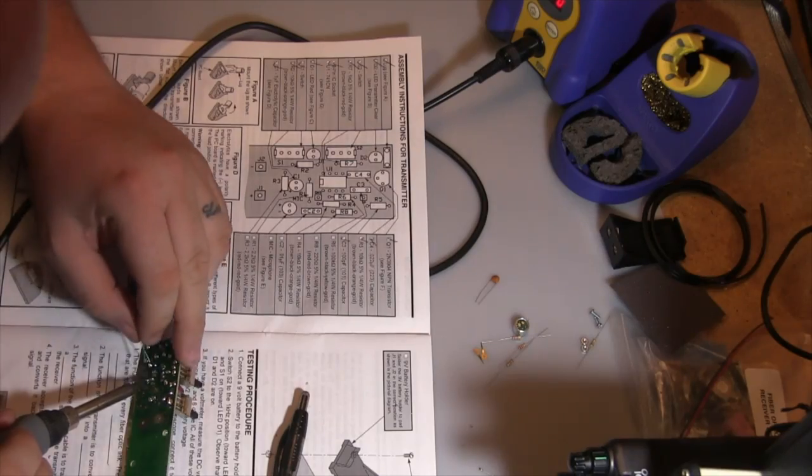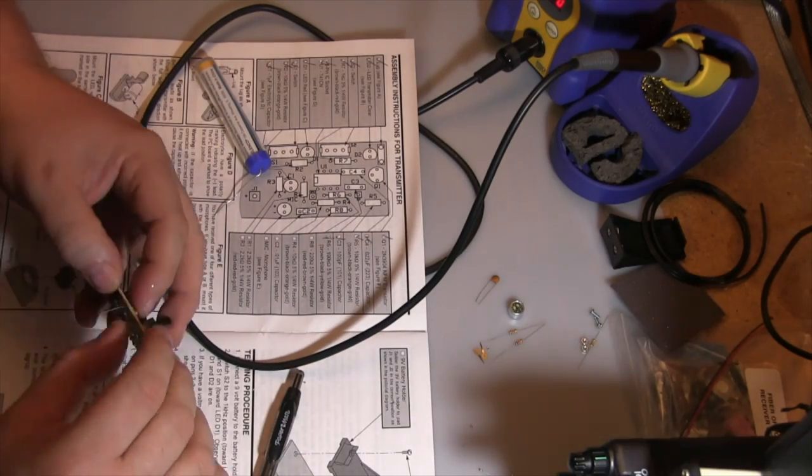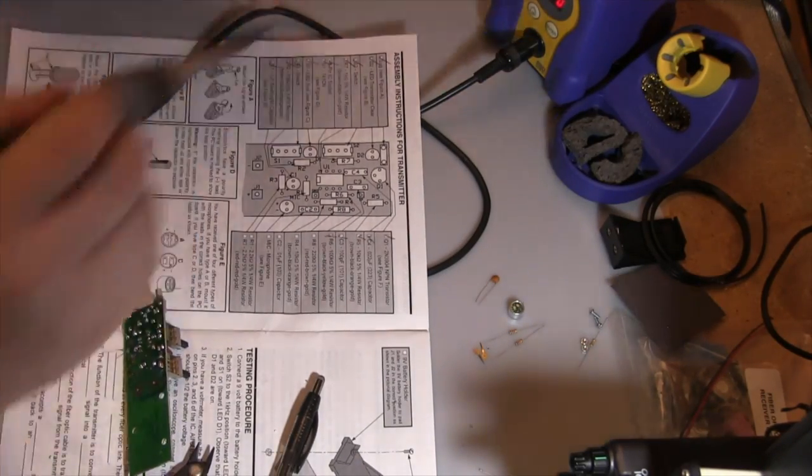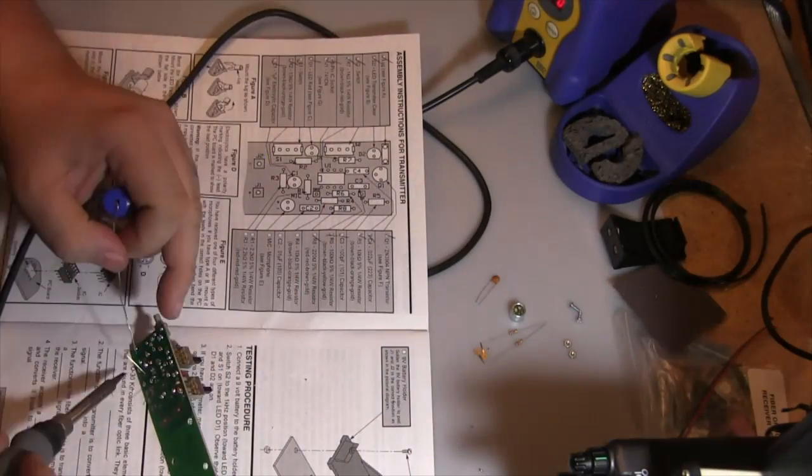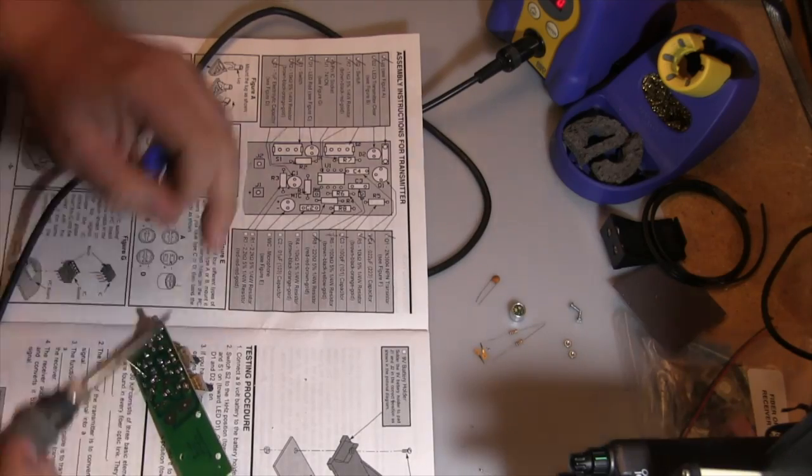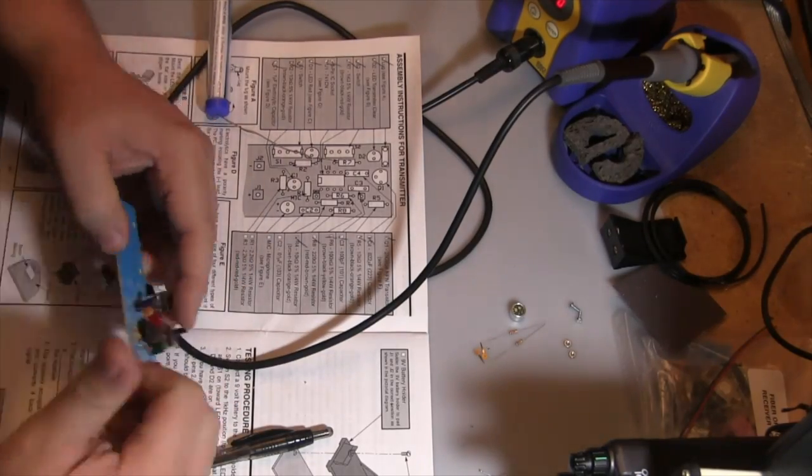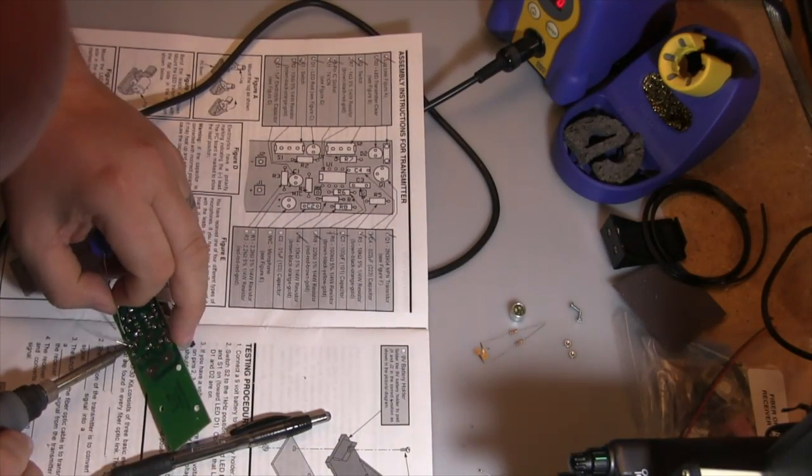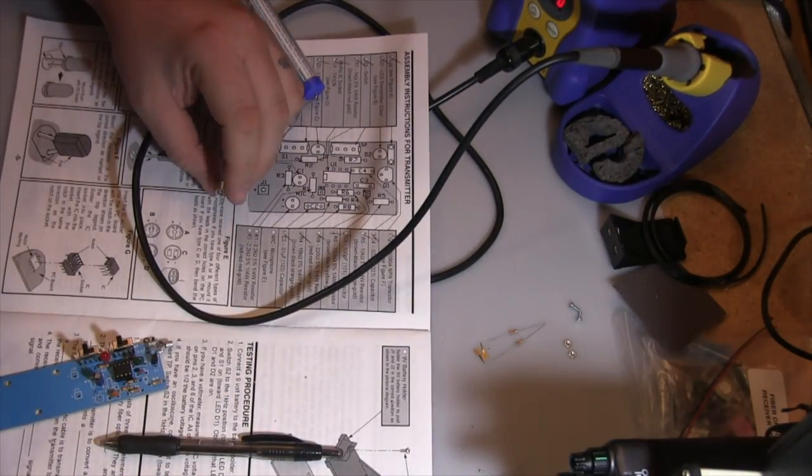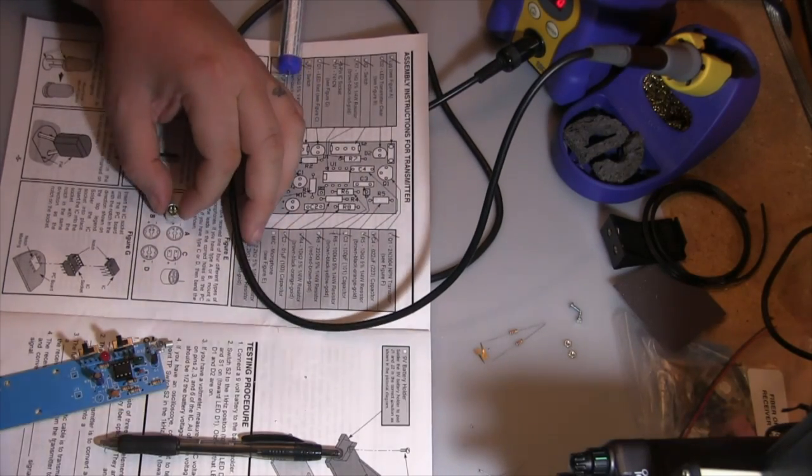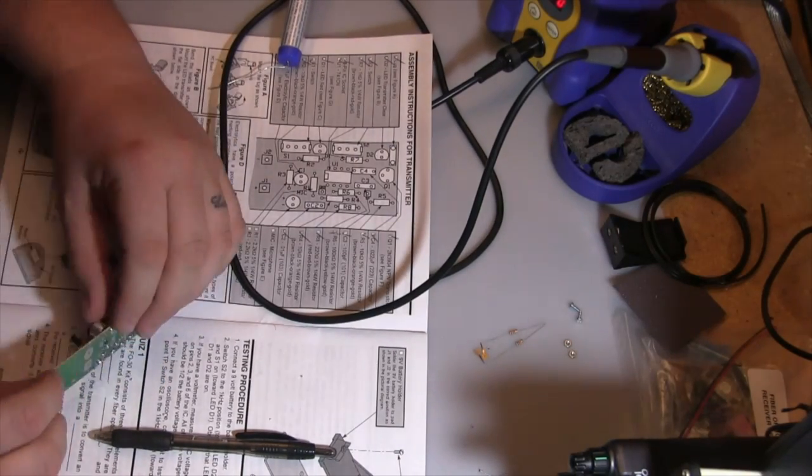One thing you're not seeing here is that each time I put a component in, I'm putting them all in the same way. The color bands of the resistors are all fashioned so the tolerance band, which is the metallic color band, is downward on the circuit board or to the very left. You're reading from left to right, with the tolerance band on the far right side.